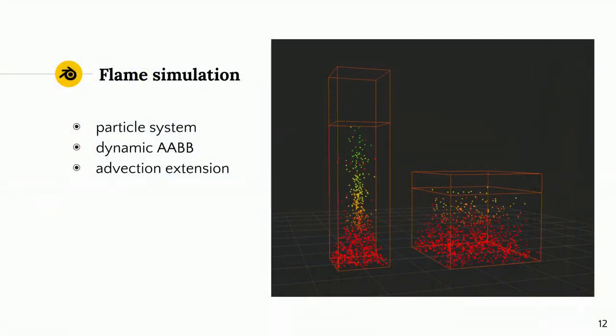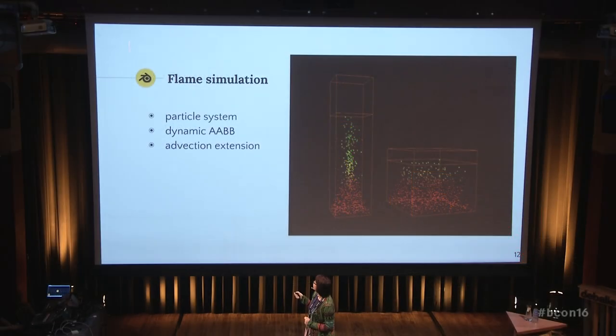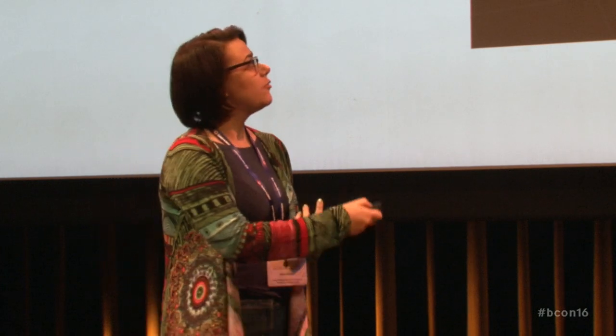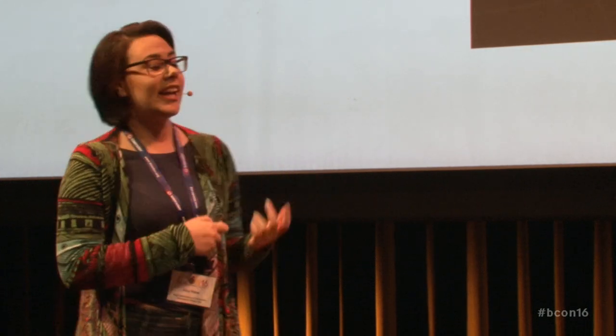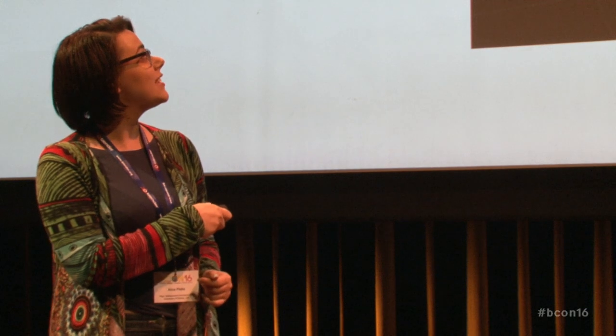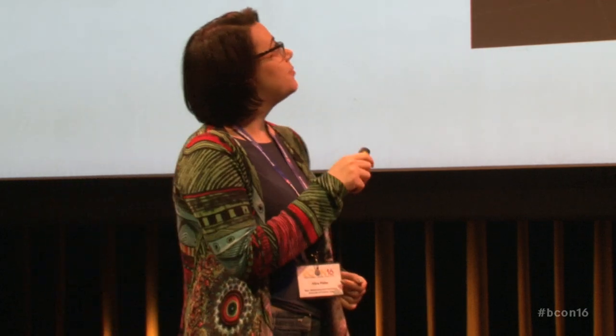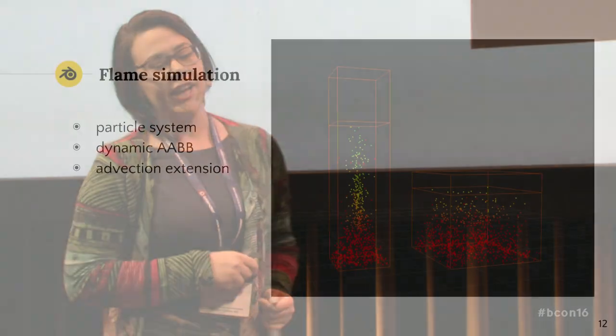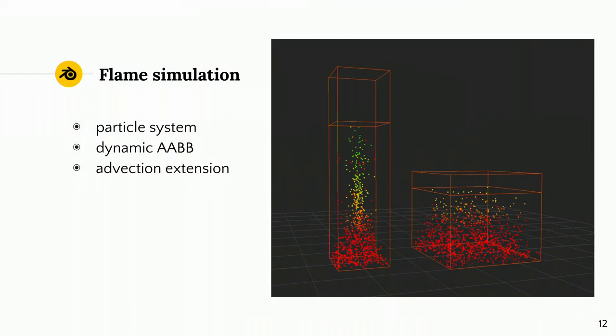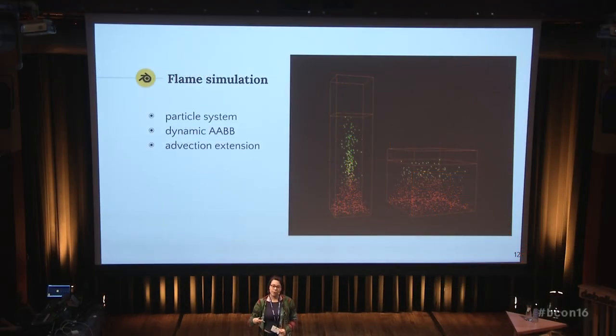For flame simulation, the flame inside Blender is represented using a particle system, initialized with emission parameters depending on the type and size of the leakage causing the fire to be simulated. For the purpose of computing the separation distance between the flame and surrounding objects, we wrapped the particle system inside a bounding volume, which is dynamically recomputed at each frame of the simulation. For simplicity, we chose axis-aligned minimum bounding boxes. Moreover, this bounding volume is extended in the upper direction, which is a solution to the problem of taking account of the advective component of heat transfer.